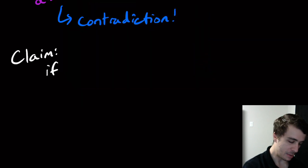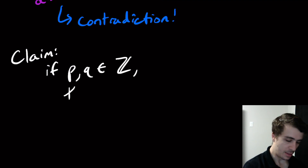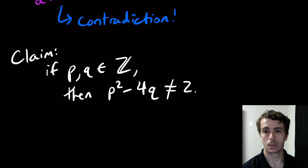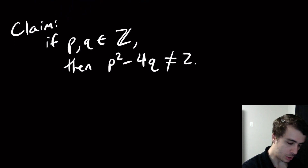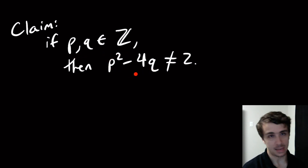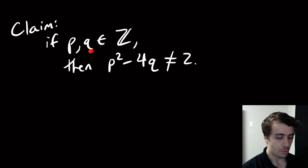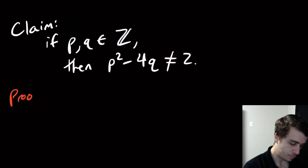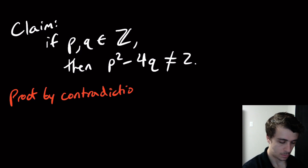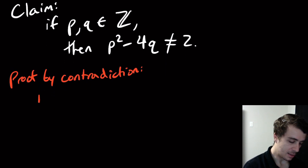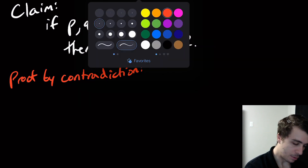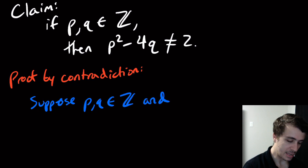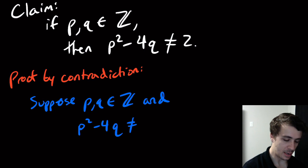Let's do one more example, which is somewhat similar. The claim is: if p and q are integers, then p squared minus 4q is not equal to 2. Let's prove this by contradiction, because it seems hard to prove directly — you'd conceivably have to try every possible integer, which is impossible. So, proof by contradiction: suppose p and q are integers and p squared minus 4q equals 2.